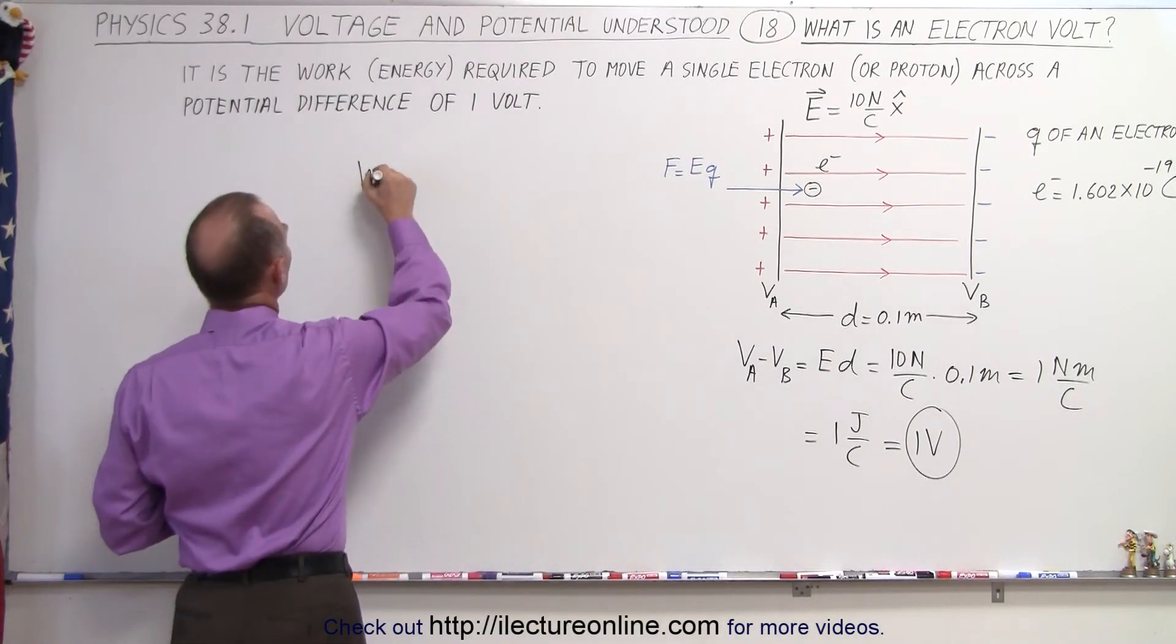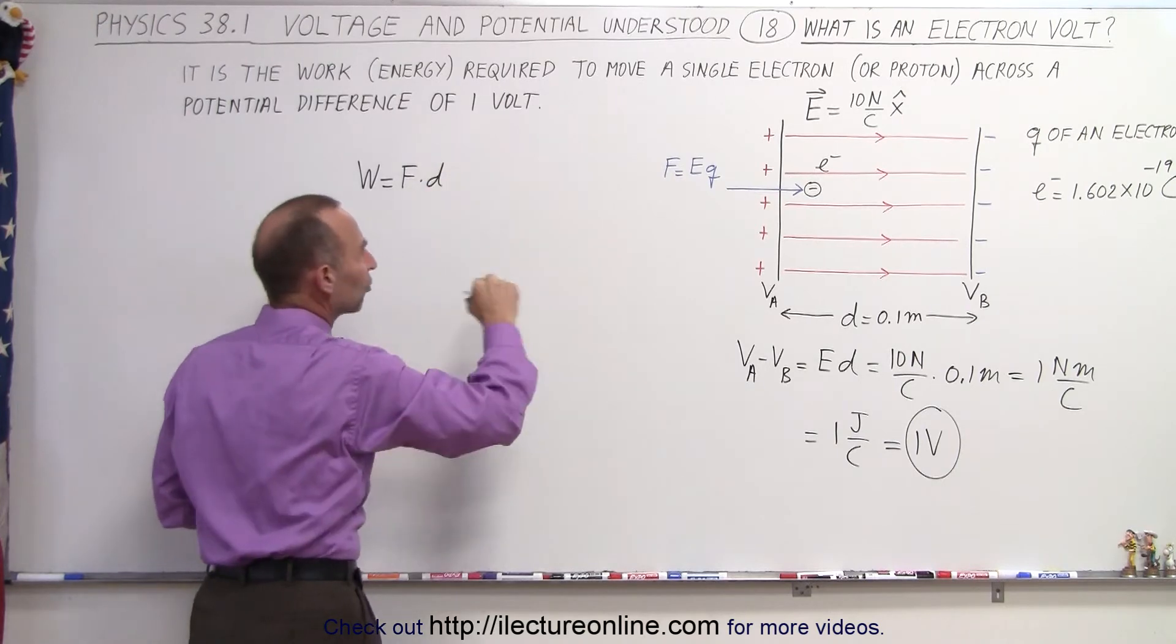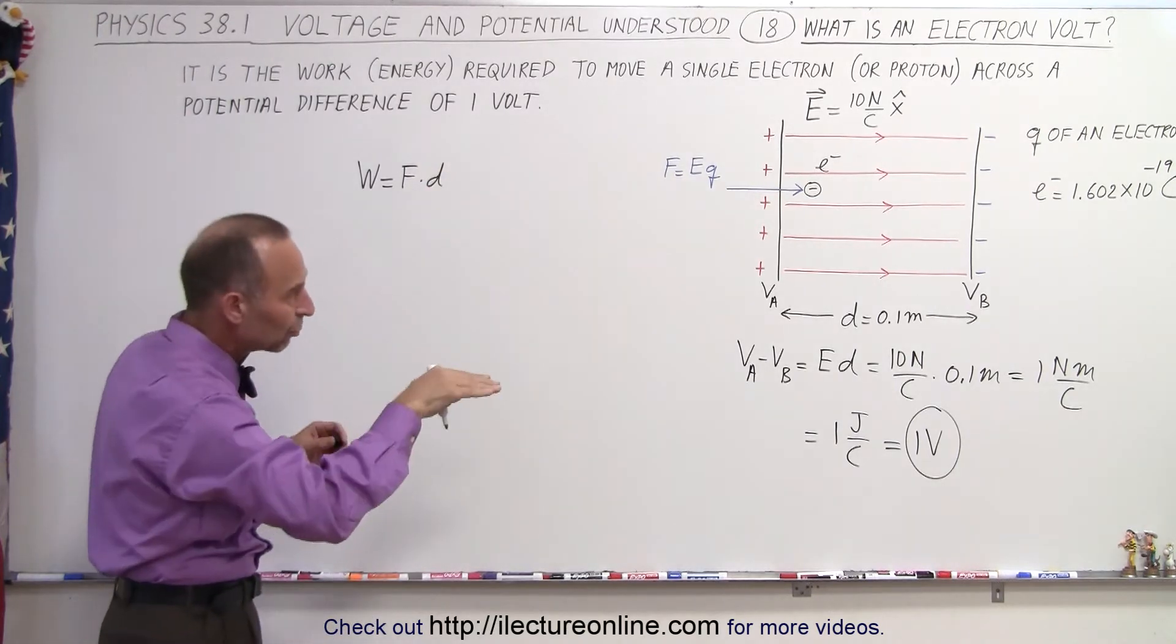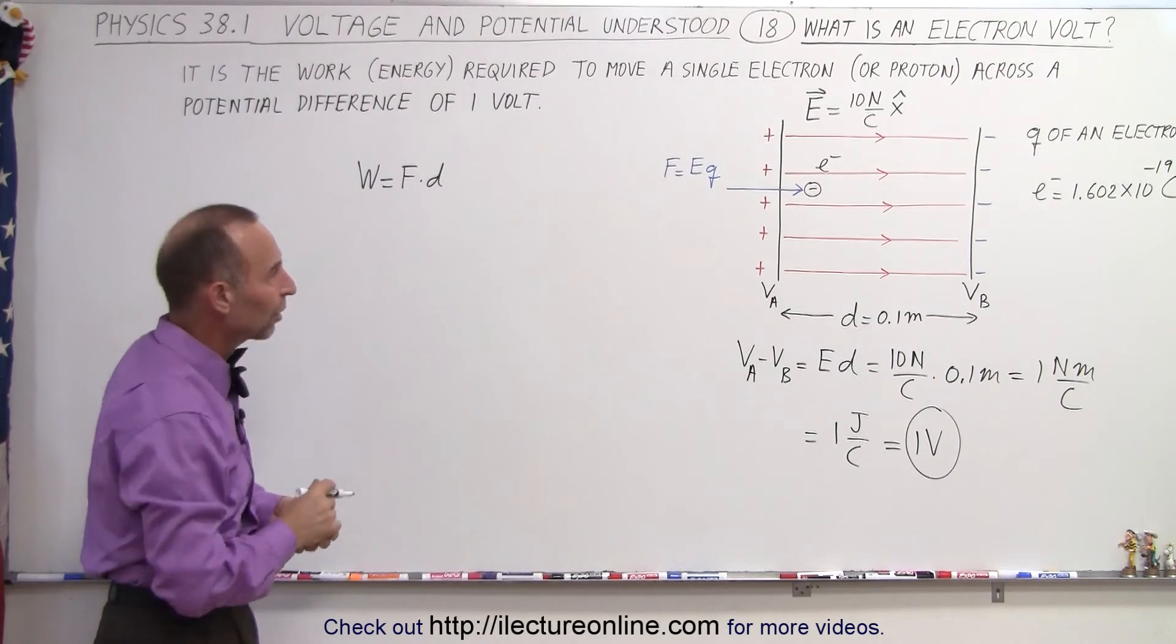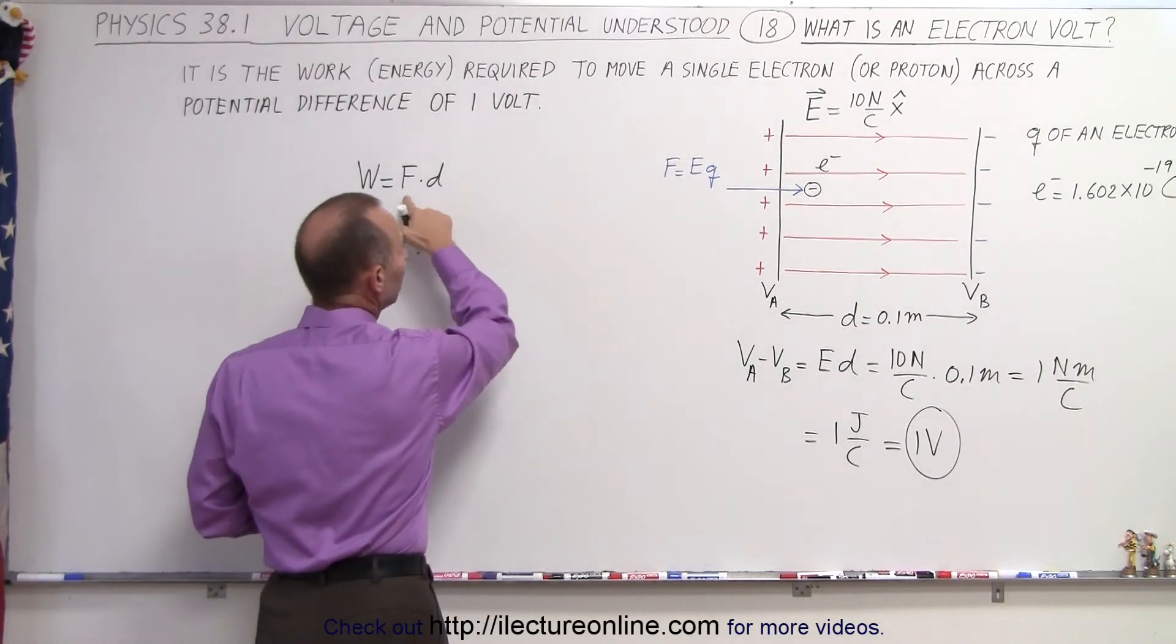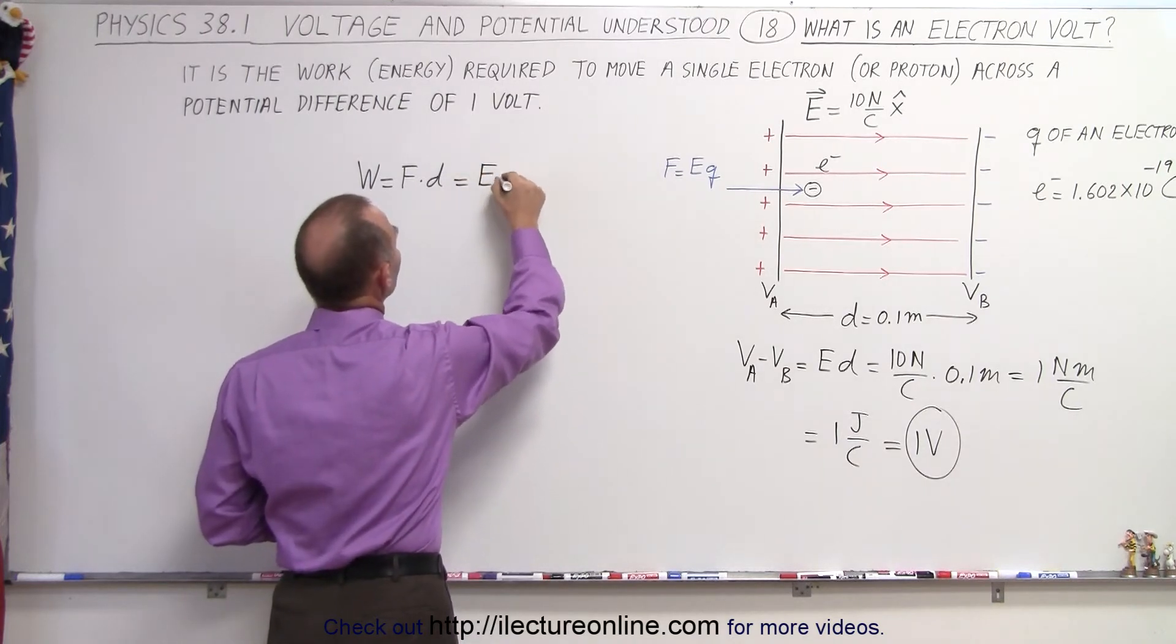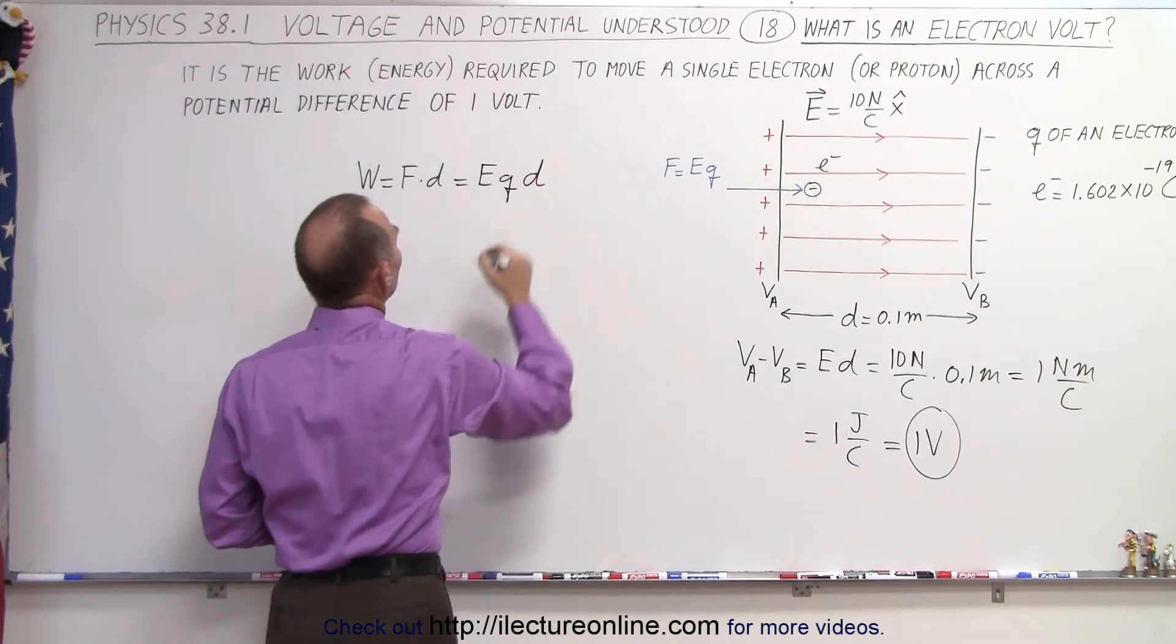So we can say that the work done is going to be equal to the force times the distance traveled. And of course since it's along the same line, the same direction, we don't have to worry about the cosine of the angle. The angle is 0 degrees. And so the force experienced by a charge inside an electric field is equal to the size of the field times the charge times d.